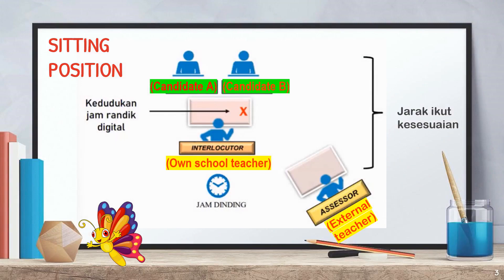To begin with, let's understand the sitting position during the speaking test. As shown on the screen, the candidates will be seated in pairs, side by side, facing the interlocutor. And at some reasonable distance, the assessor will be seated to one side, near enough to see and hear everything clearly in order to evaluate the candidates individually. The assessor is the teacher from a nearby school or centre, whereas the interlocutor is the teacher who teaches in the candidate's school or centre. The interlocutor will use a stopwatch to monitor the assessment timing throughout the speaking test.